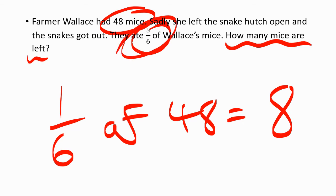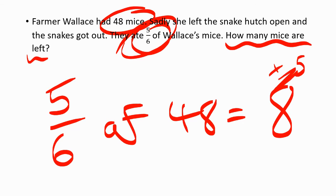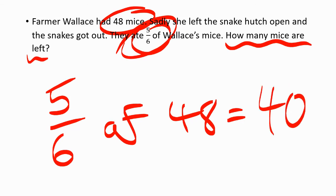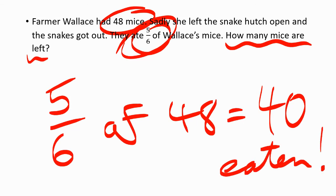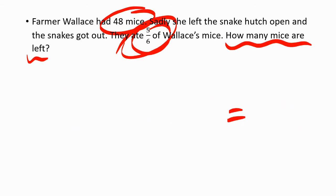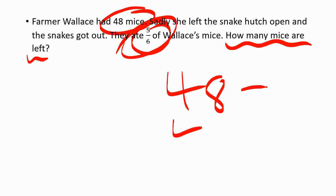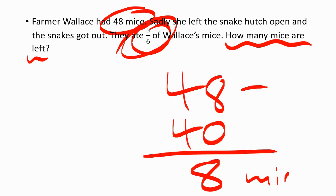Now we've got to find five-sixths. We found one-sixth, which was 8, so five-sixths would be 8 times 5, which is 40. So 40 of the mice have been eaten. But it's not the end — Farmer Wallace had 48 mice, minus 40 that got eaten, means she's got 8 mice left.